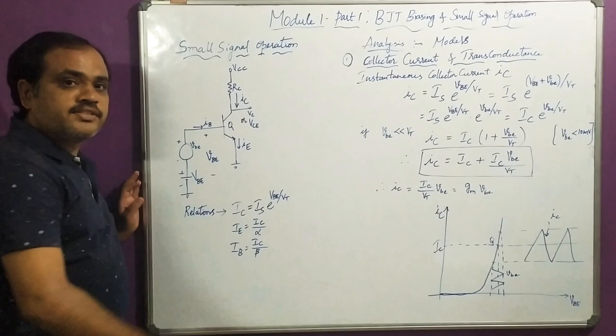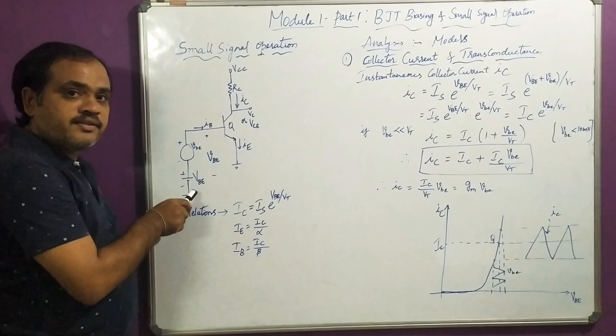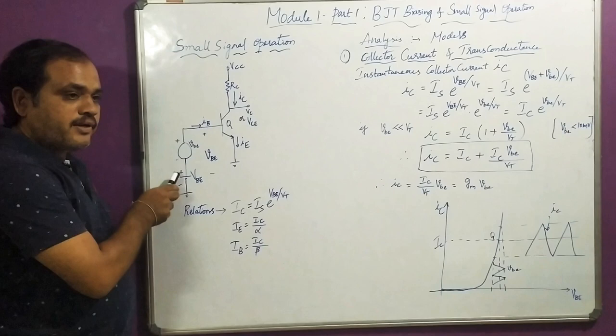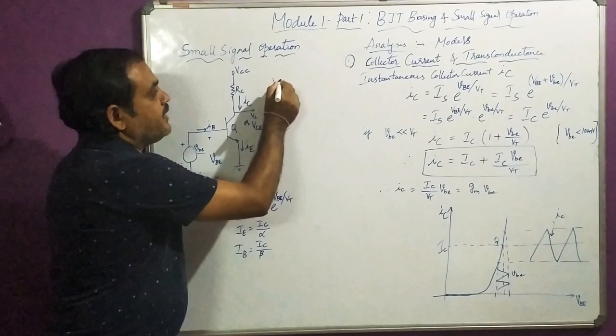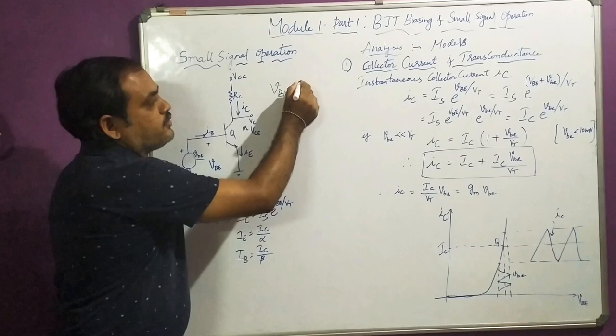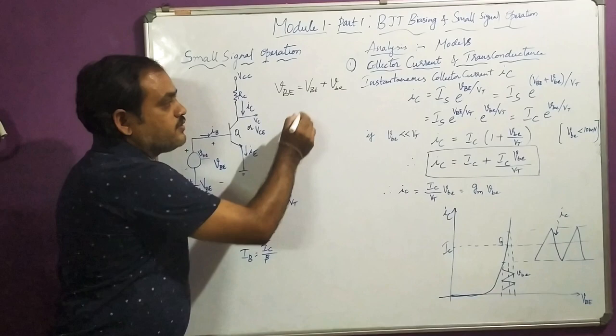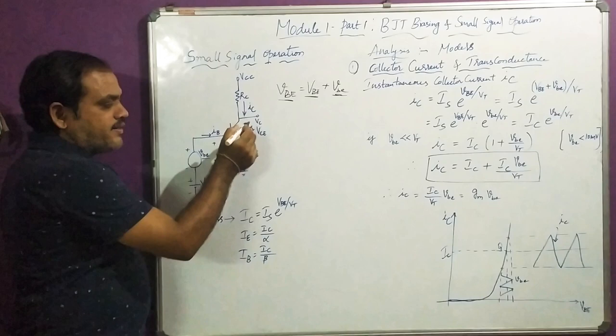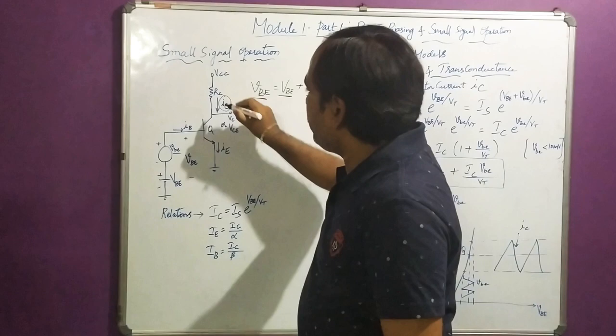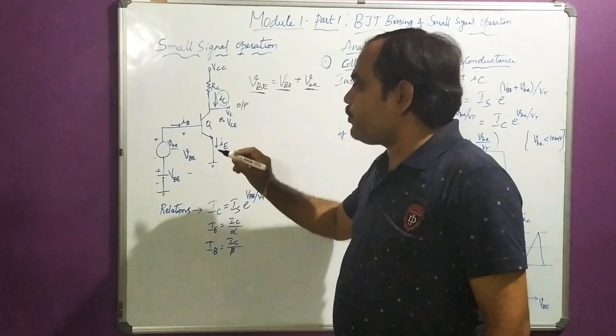As I mentioned, the small signal is going to be superimposed on the DC biasing voltage. You can observe the base-emitter voltage VBE, which is the DC supply. I am going to superimpose a small signal, which is small vBE. Superimposed means I am going to get an instantaneous voltage: small v, capital VBE = VBE + small vBE. This DC biasing voltage plus small signal voltage gives an instantaneous voltage, which produces an instantaneous collector current and instantaneous emitter current. The output is current and the input is voltage.